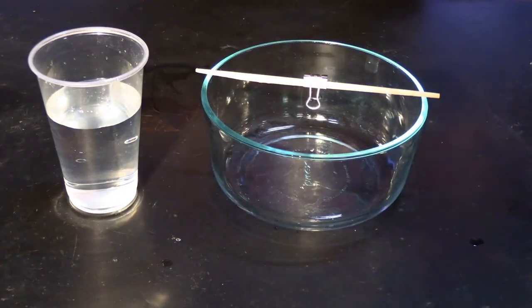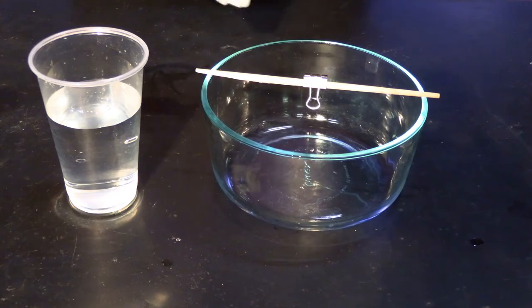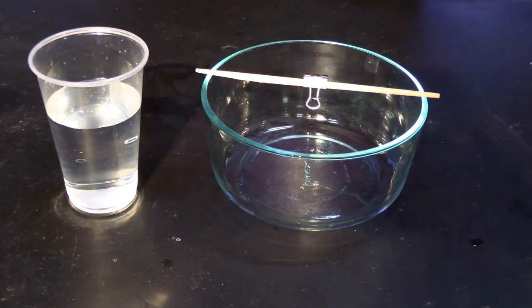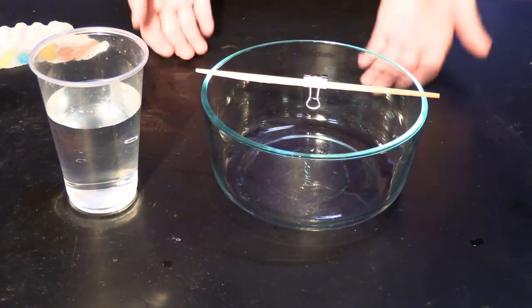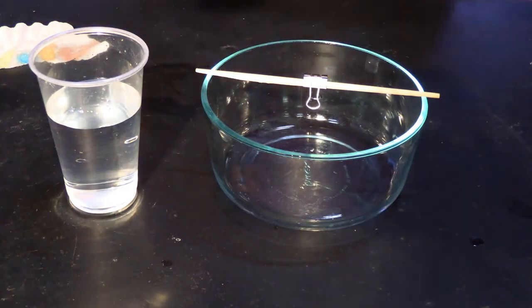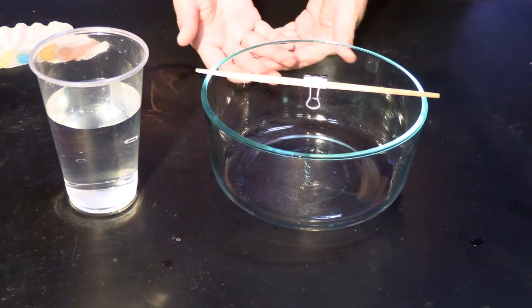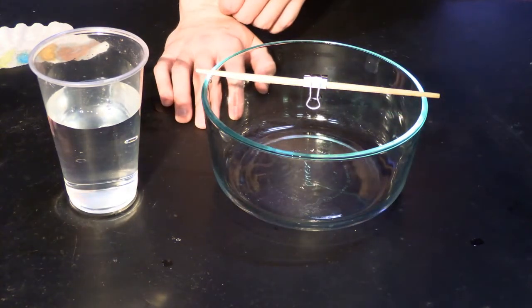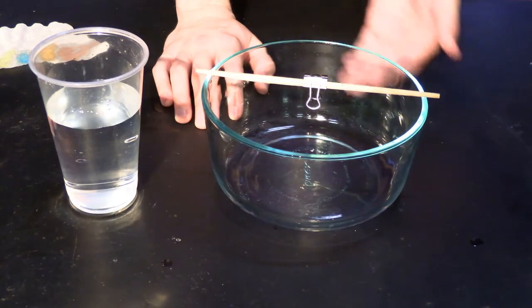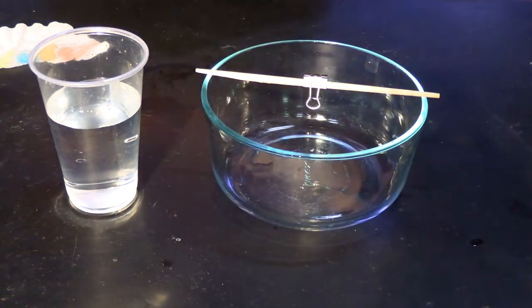What we're gonna do now is we are going to cause the dyes to start to separate, and the way we're gonna do that is by something called capillary action. Now capillary action basically is what happens when water moves against gravity due to it moving through a material. So if you've ever gotten like a drop of water on your shirt and you've seen it crawl up your shirt a little bit, that's capillary action. We're gonna be using that right now.